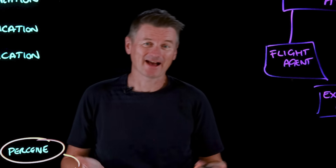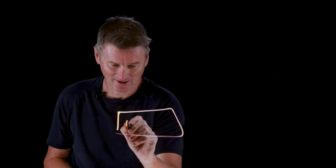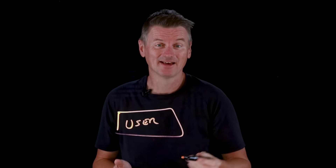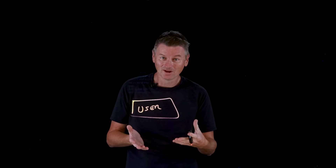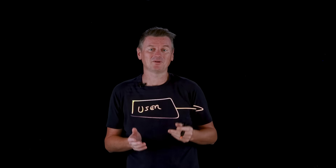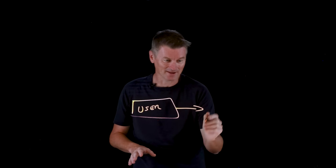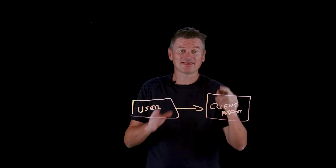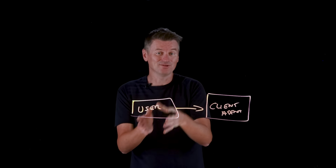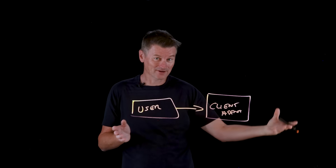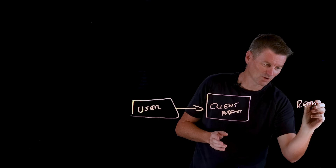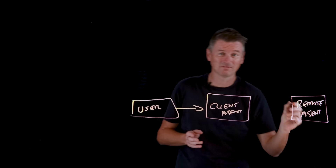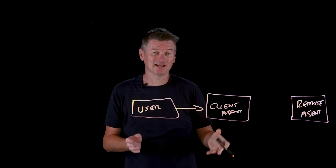Let's start by talking about the core actors in A2A interactions. We have a user — that could be a human operator or an automated service — and it's the user that initiates a request or sets a goal requiring the help of one or more AI agents. That request is received by the client agent, which acts on behalf of the user and initiates requests to other agents. Those other agents are called remote agents. There could be a bunch of these in a mesh.